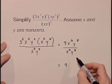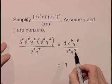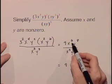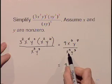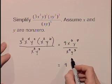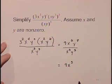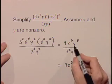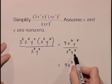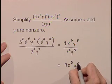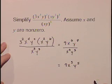Notice we have like bases being divided. The property for like bases being divided is to subtract the exponents. So I have x to the sixth divided by x cubed. So I'll have x to the sixth minus 3 becomes x to the 3. Y to the eighth divided by y cubed. Again we'll subtract exponents. Y to the eighth minus 3 becomes y to the fifth.